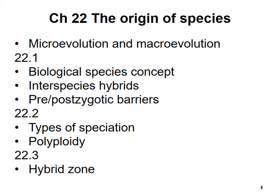Chapter 22 is called The Origin of Species. In this chapter we're going to talk about microevolution and macroevolution, different species concepts, interspecies hybrids, pre- and post-zygotic barriers to producing interspecies hybrids, types of speciation, and the hybrid zone.